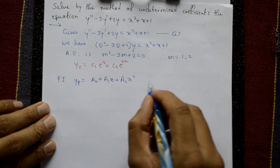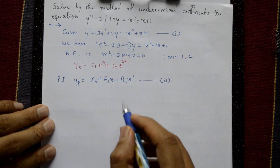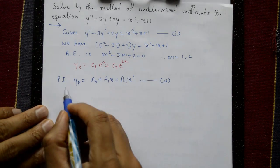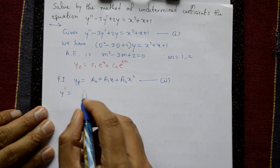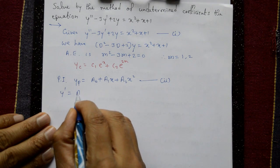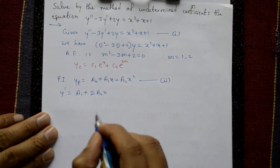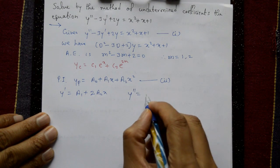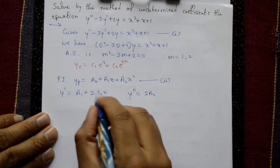To find the coefficients, we differentiate yp. Substituting into equation number one requires y, y', and y''. Differentiating: y' = a₁ + 2a₂x, and differentiating again: y'' = 2a₂.